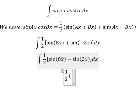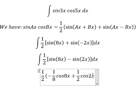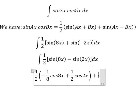The integral of sin(8x) gives us negative one over eight cos(8x). The integral of sin(2x) has a negative, but we have another negative, so we get positive one over two cos(2x), plus C.